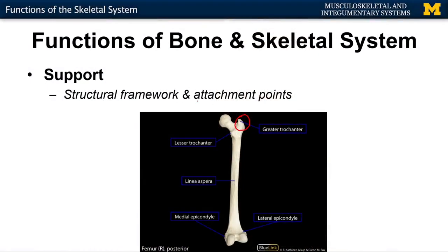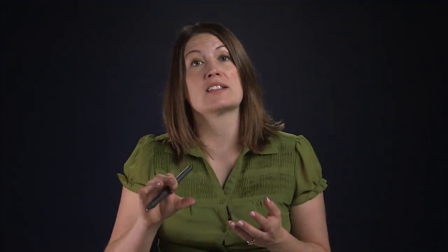One thing I want to talk about — and we'll cover this in greater detail when we discuss individual bones — is the skeleton as an attachment point. You're going to have ligaments and tendons attaching to certain parts of the bone. When you have these big bumps associated with bone, these are attachment points. When the muscle is attached there, it'll contract and allow for movement to occur.